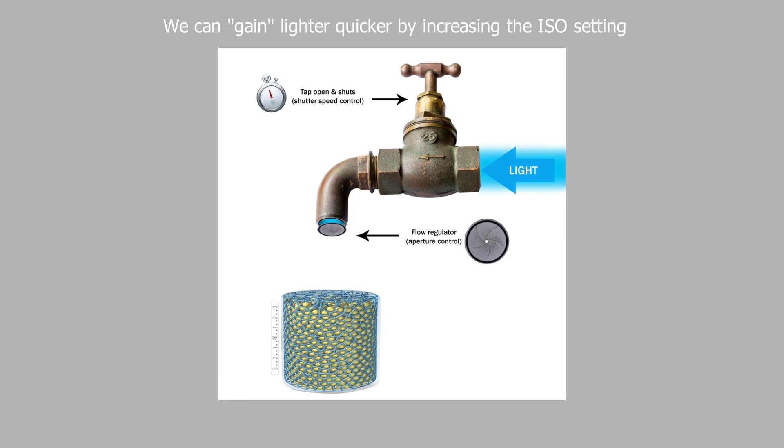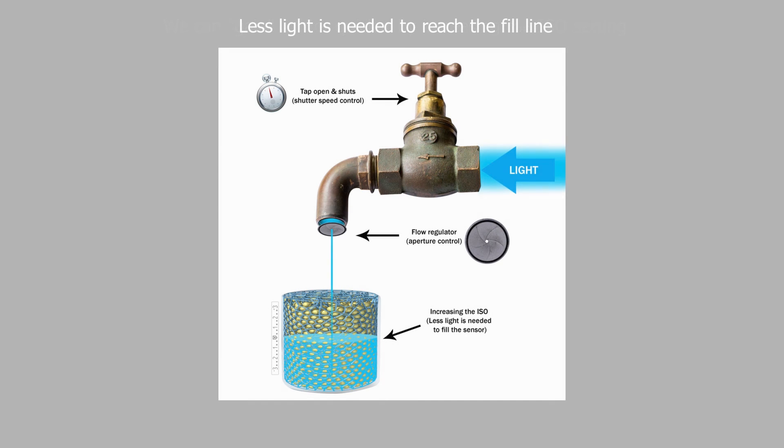We can gain light quicker by increasing the ISO setting. The sensor fills quicker, so not as much light is needed to reach the fill line.